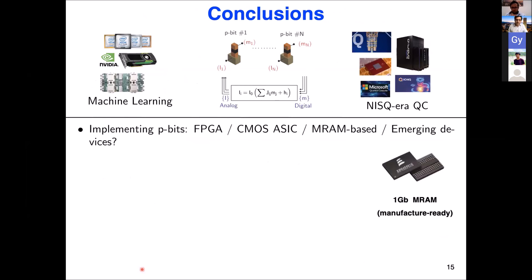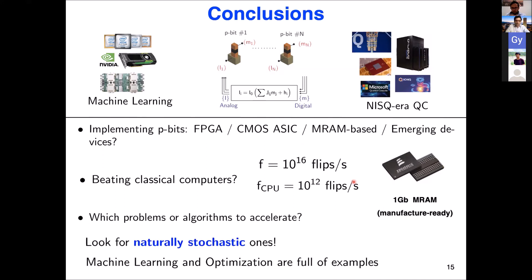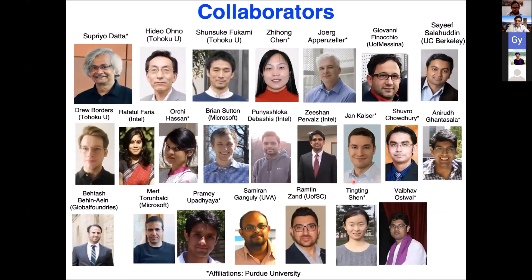So this is the final conclusion slide. I talked about pbits in terms of its connection to these various active fields that are trying to develop accelerators. Now, I've talked about MRAM and Spintronics in this talk, but we're actively seeking CMOS and FPGA implementations to accelerate these concepts and maybe emerging hardware or other methods of getting randomness could also be used. And there's a possibility of beating classical computers because of this flips per second argument that I made. And finally, what types of problems or algorithms should we accelerate? Well, I think the keynote is look for naturally stochastic ones and machine learning and optimization are full of examples. So with that, I'd like to conclude and thank the long list of my collaborators and colleagues, and I'll take any questions that you may have. Thank you.